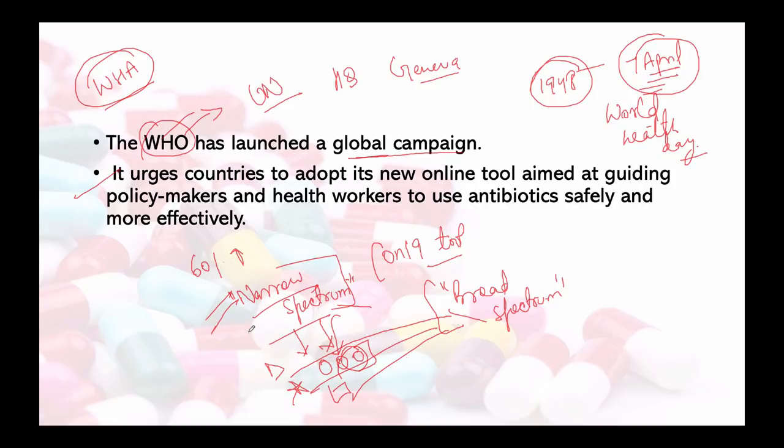Now regarding microbial resistance — if we use broad spectrum antibiotics, the bacteria will evolve and develop resistance. They essentially learn that the antibiotic cannot kill them, so resistance will develop and eventually antibiotics will stop working. In this online tool, the aim is to increase 60% narrow spectrum antibiotic use.